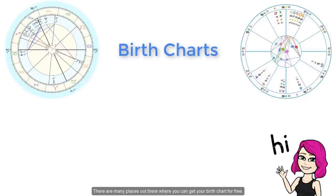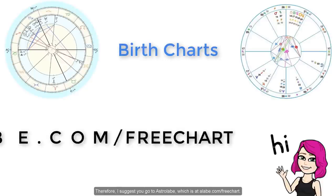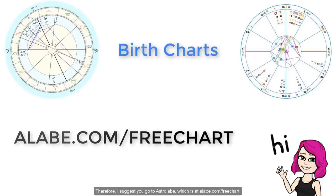There are many places out there where you can get your birth chart for free. However, since we're only looking at your moon sign, rising sign, and your sun sign, we don't really need anything complicated. Therefore, I suggest you go to Astrolabe, which is at alabe.com/free-chart. You'll see the text come up on your screen, but I'll also link it down below the video.